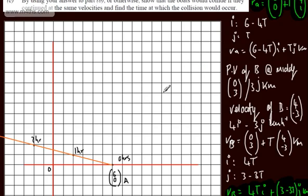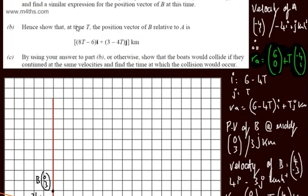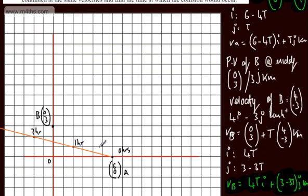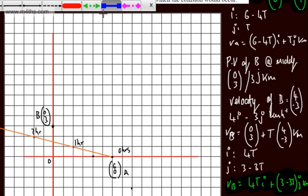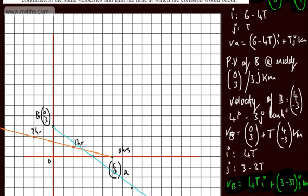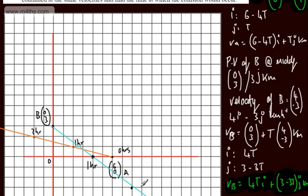If we now look at boat B, it starts at (0, 3) with velocity vector (4, −3), so it goes right 4 and down 3 every hour. Boat B follows this path. After 1 hour it's here, after 2 hours here. At midday that's 0 hours. That gives us the velocity vectors of boat A and boat B.